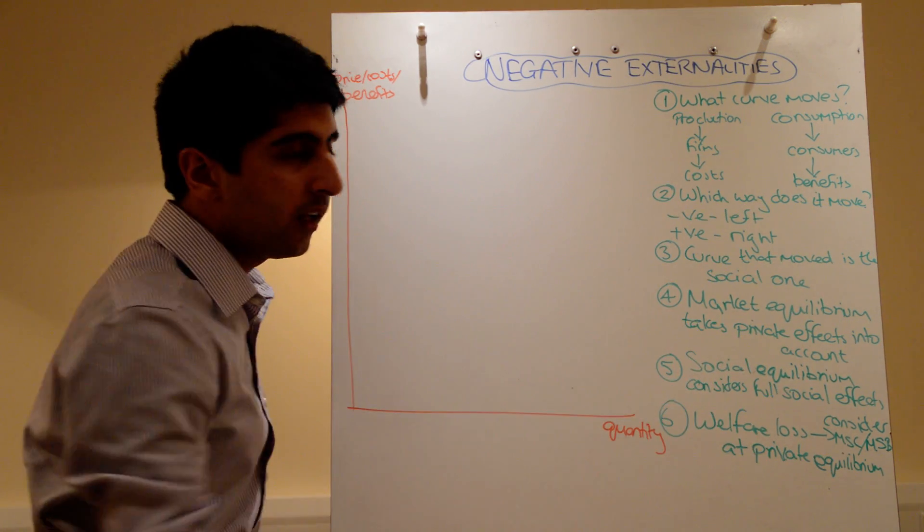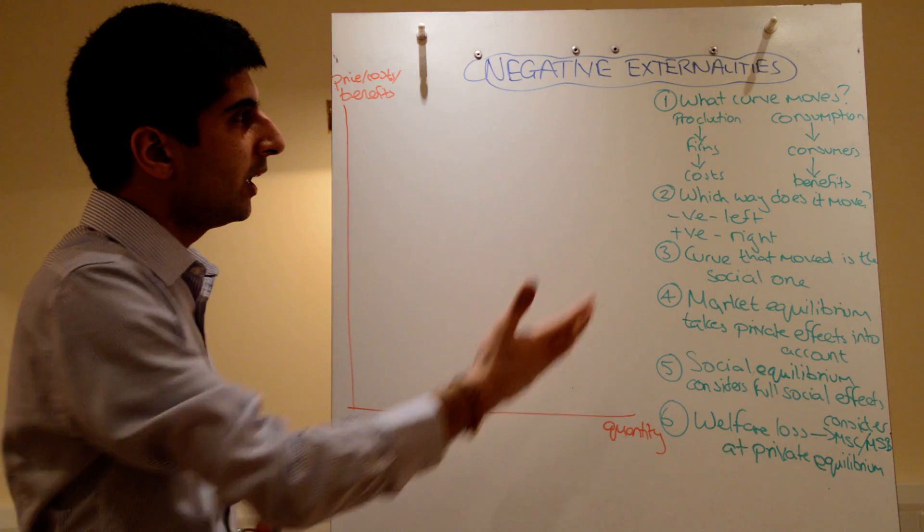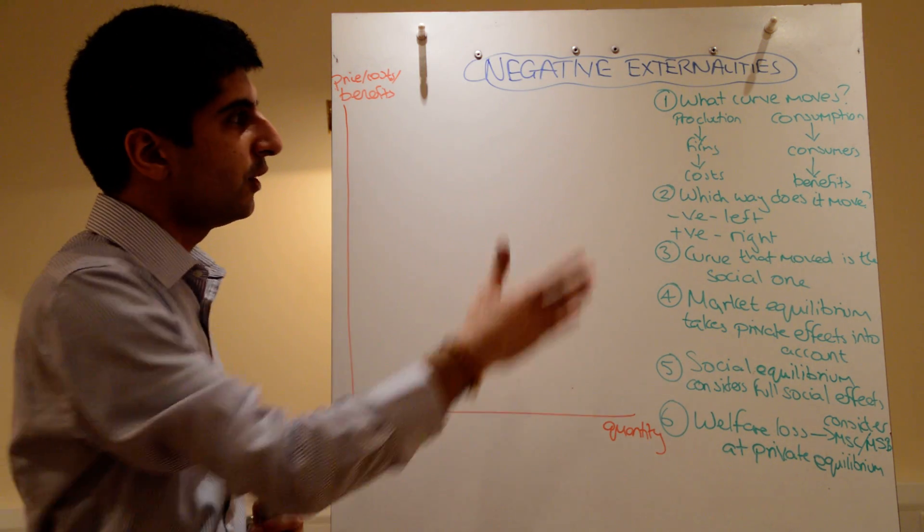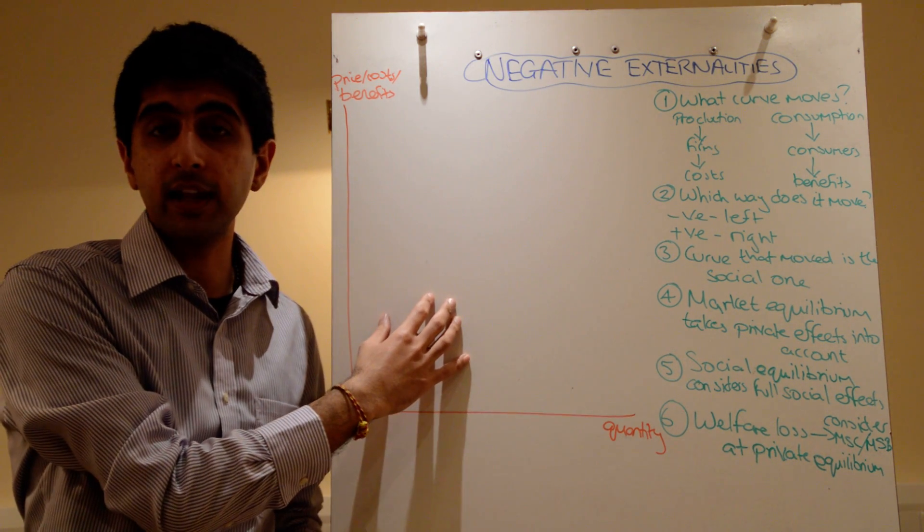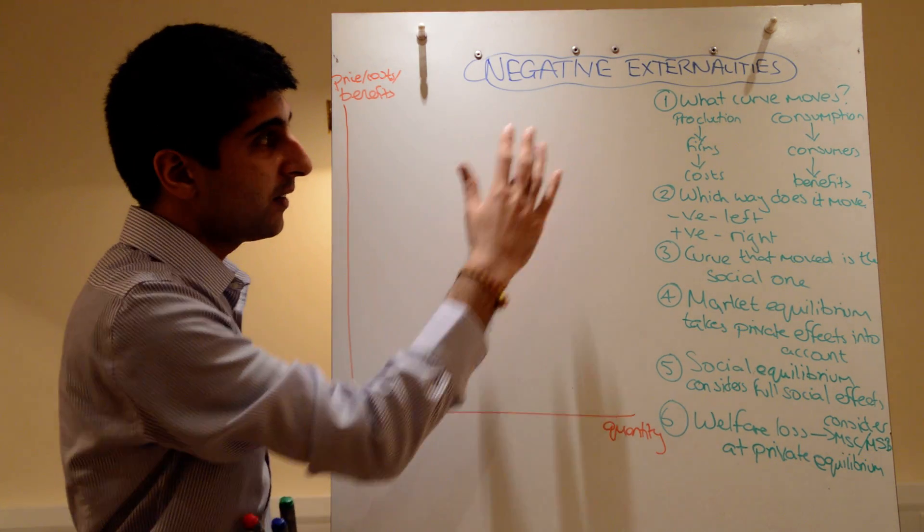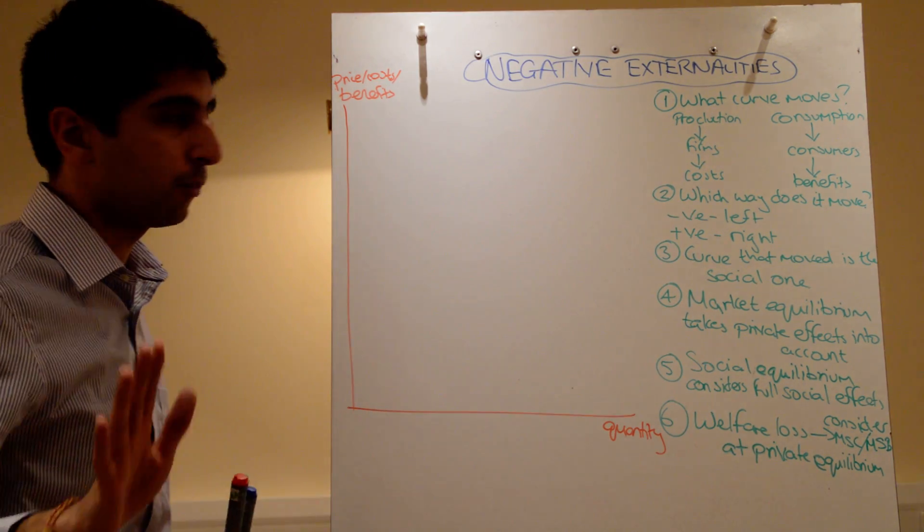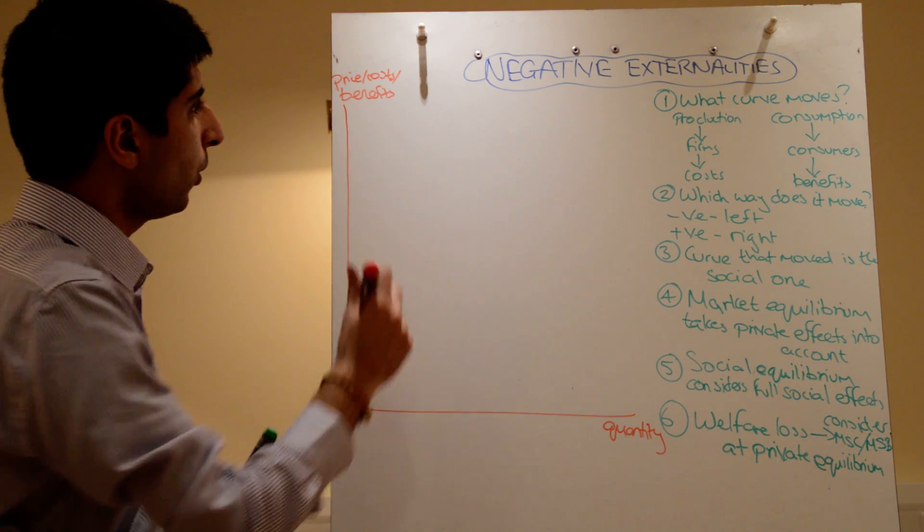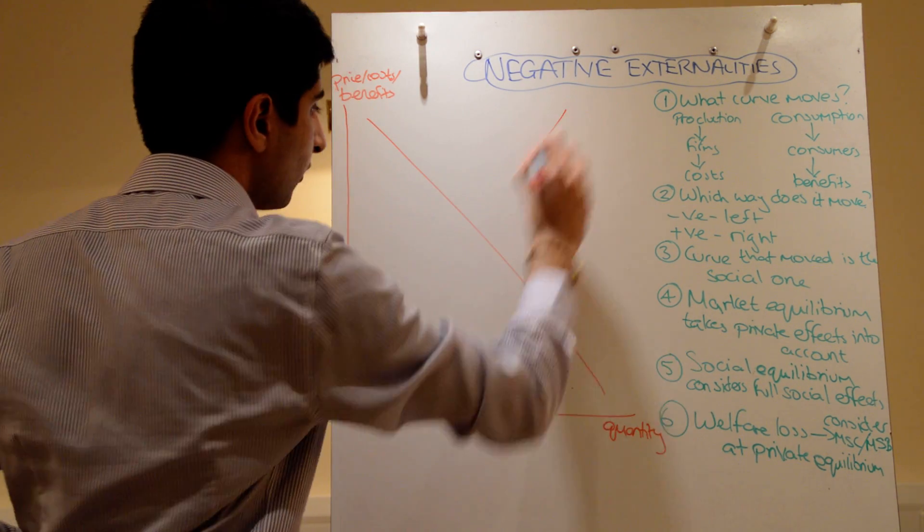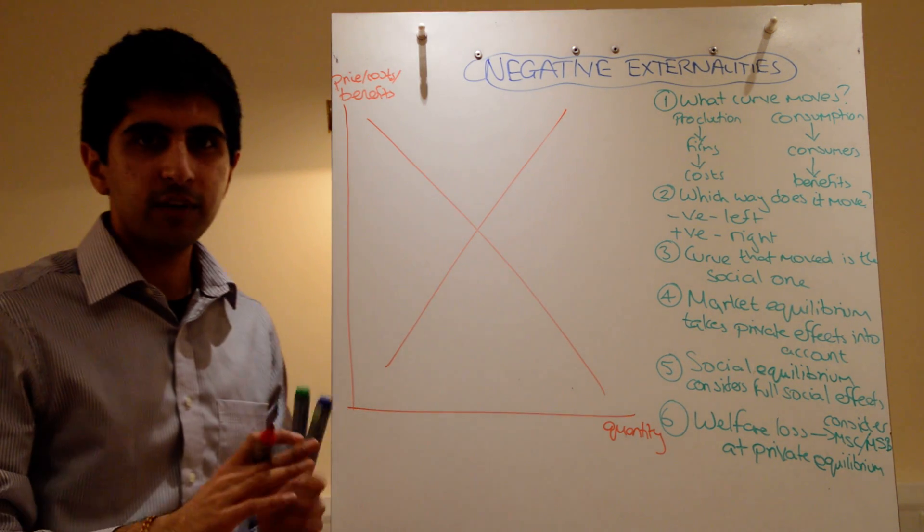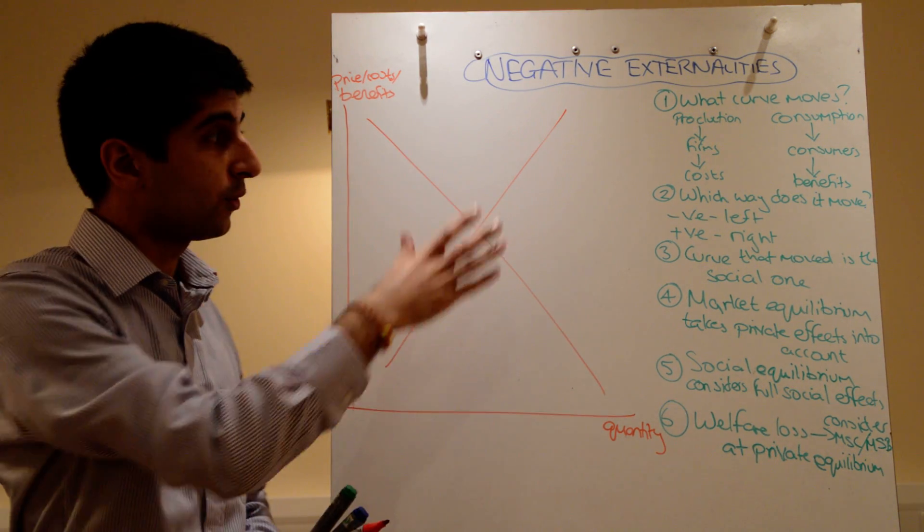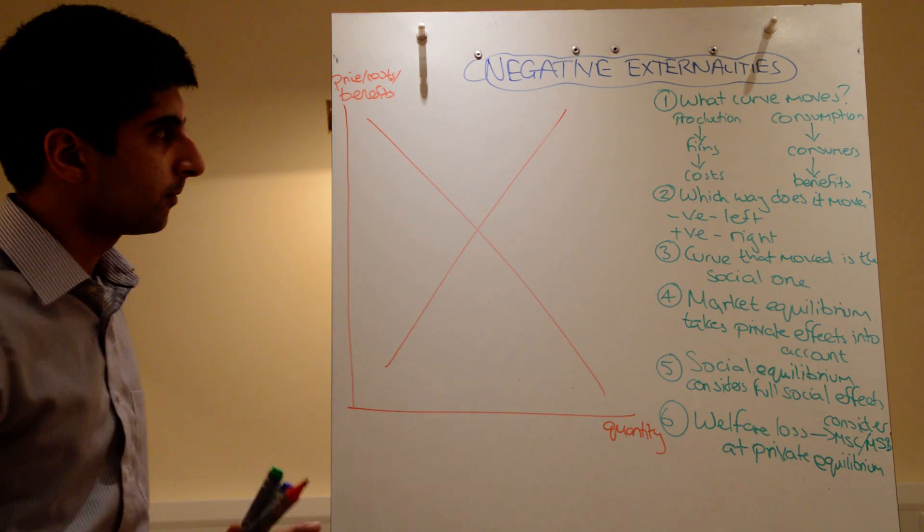I've put on the right hand side here a little kind of pro forma, a little technique really for you to make sure you get all of these externality diagrams correct. So the negative and positive, this same kind of structure applies for drawing diagrams. You'll never get them wrong following this. So we always start with a downward sloping and an upward sloping curve. This is a welfare diagram, so it's not just demand supply, it's something else.